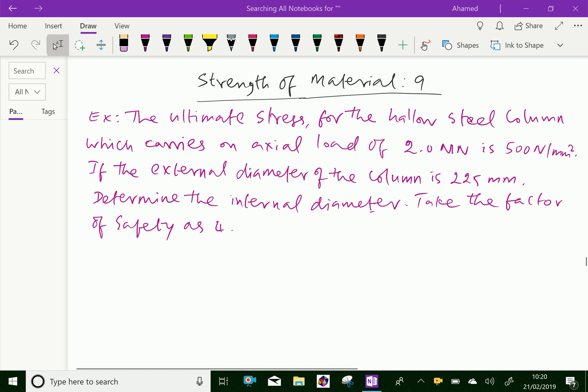Look at this example. The ultimate stress for the hollow steel column which carries an axial load of 2 mega newton is 500 newton per mm squared. If the external diameter of the column is 225 mm, determine the internal diameter. Take the factor of safety equal to 4.